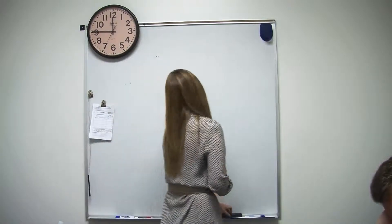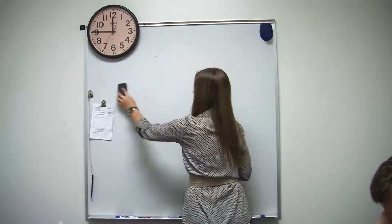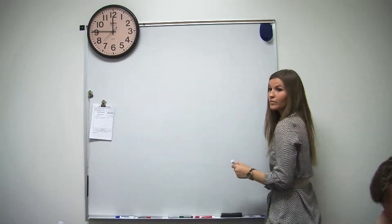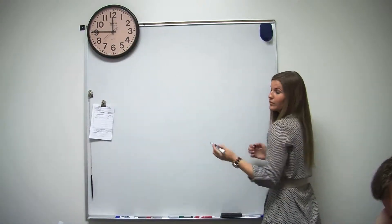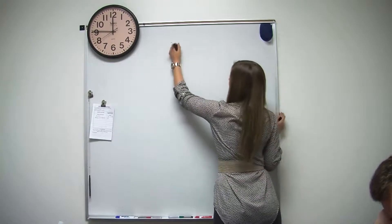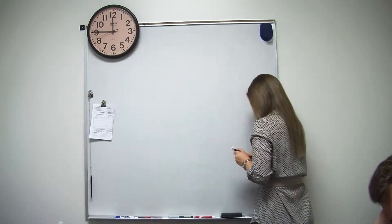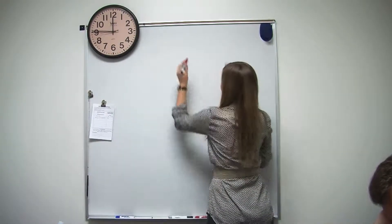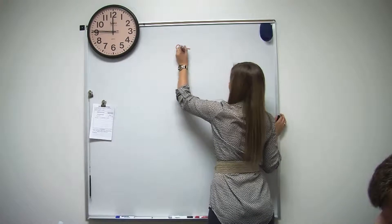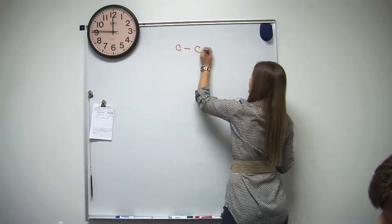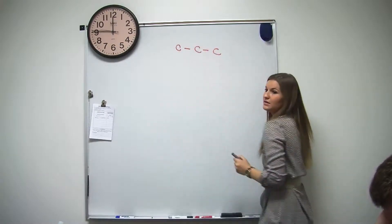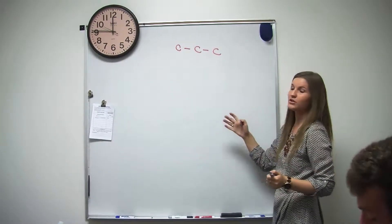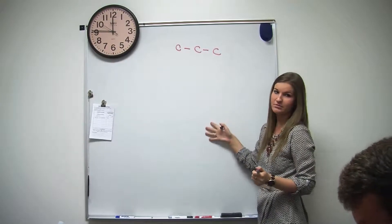So what did we end glycolysis with? Two pyruvates. So let's just focus on one pyruvate and then we can just times everything by two, since we have two of them. So this is our acetyl-CoA formation.